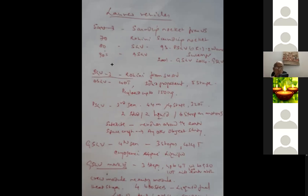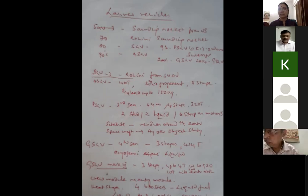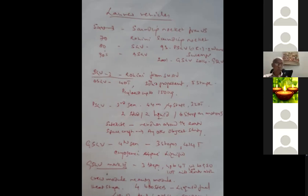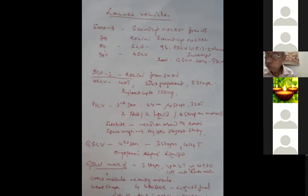Low earth orbit ranges from 100 to 1,500 kilometers from the earth. Up to 1,500 kilometers in space is the low earth orbit. Generally, all remote sensing satellites, meteorological data collection, and surveillance satellites are placed in low earth orbit. Middle earth orbit ranges from 1,500 to 10,000 kilometers. It is called middle earth orbit. Very few communication satellites are launched here, but remote sensing and surveillance satellites are also launched in middle earth orbit.